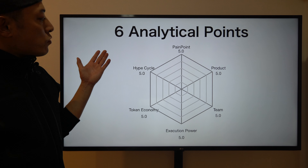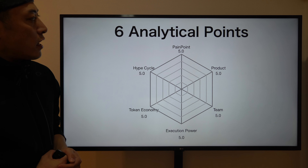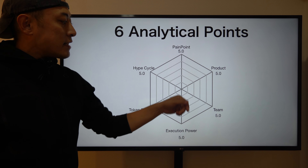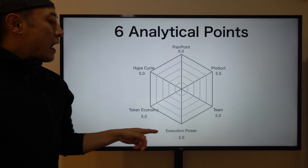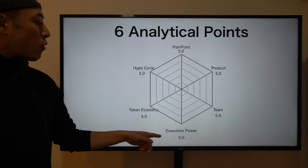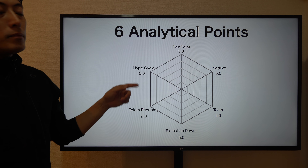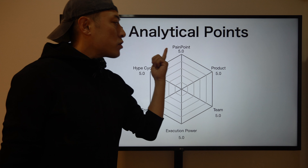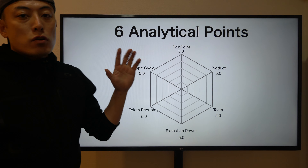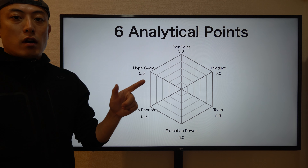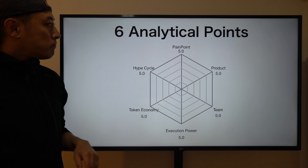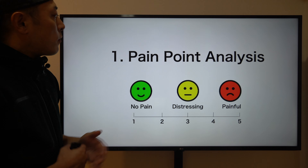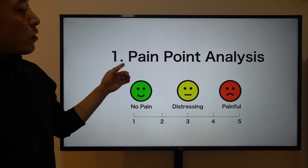As usual, I'm going to apply six analysis points: pain points, products, team, execution power, token economy, and hype cycle. For each I set a 5.0 point maximum, so the total score is 30 points. Let's start on number one: pain point analysis.